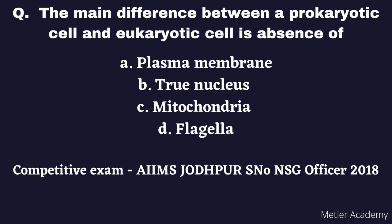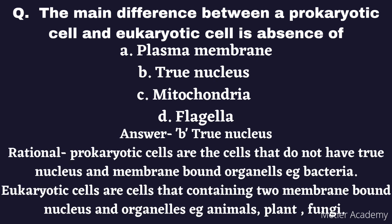The next question is: The main difference between a prokaryotic cell and a eukaryotic cell is the absence of. Options are: A) Plasma membrane, B) True Nucleus, C) Mitochondria, D) Flagella. This question was asked in the 2018 AIIMS Jodhpur Senior Nursing Officer exam. The correct answer is Option B, True Nucleus. Prokaryotic cells do not have a true nucleus or membrane-bound organelles — example: bacteria. Eukaryotic cells contain membrane-bound nuclei and organelles — examples: animals, plants, and fungi.